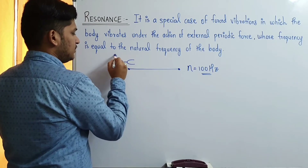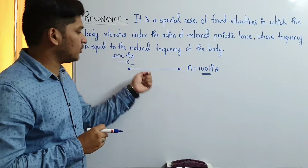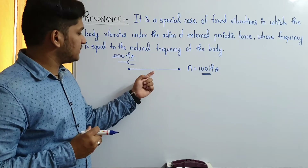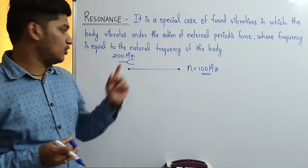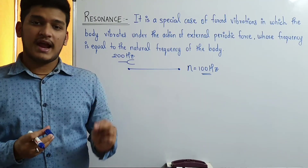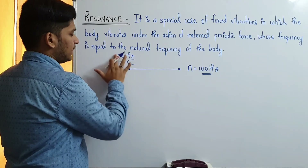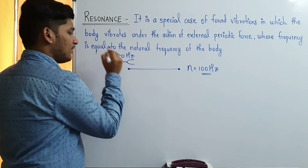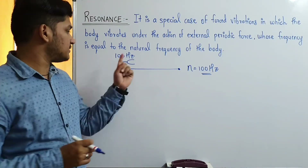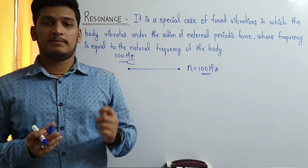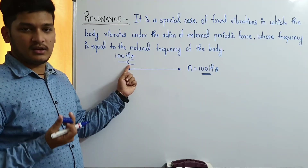Consider a tuning fork of 200 Hz. A second body will start oscillating with a frequency of 200 Hz because of this tuning fork — that would be a case of forced oscillations. But if we have another tuning fork also oscillating with 200 Hz due to this tuning fork, this becomes a special case which is the case of resonance, because the external agent's frequency matches the natural frequency of the body.